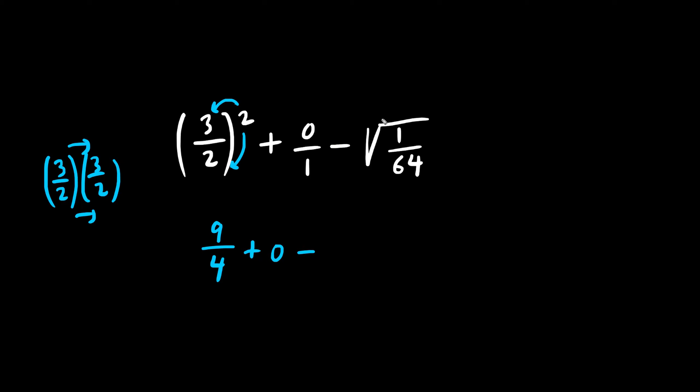Minus the square root of a fraction is the square root of the top divided by the square root of the bottom. So what is the square root of one? It is one. And what is the square root of 64? It's eight. So now the question is, what is nine over four minus one eighth?